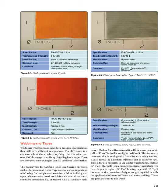Webbing and Tapes: While many webbings and tapes have the same specifications, they still have different designations. The difference follows a common rule of thumb where anything one inch or wider and over 1,000-pound strength is webbing; anything less is a tape. There are, however, some examples that fall outside of this criterion. The primary use for webbing is for load-bearing purposes, such as harnesses and risers, while tapes are for use as support and reinforcing for canopies and containers.